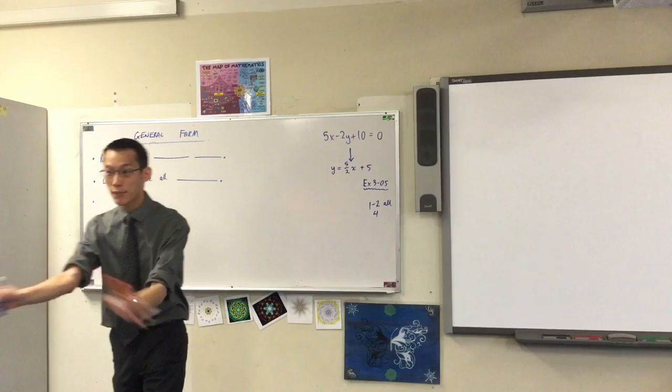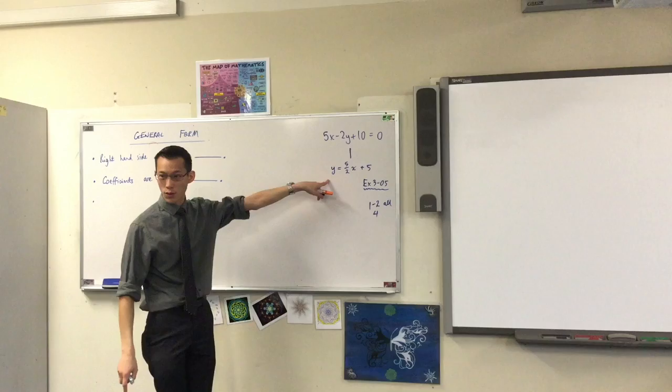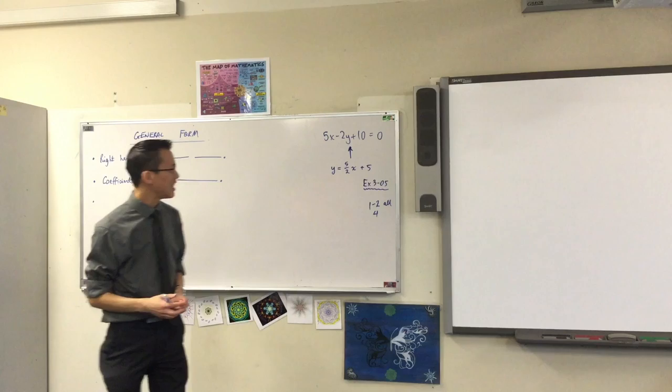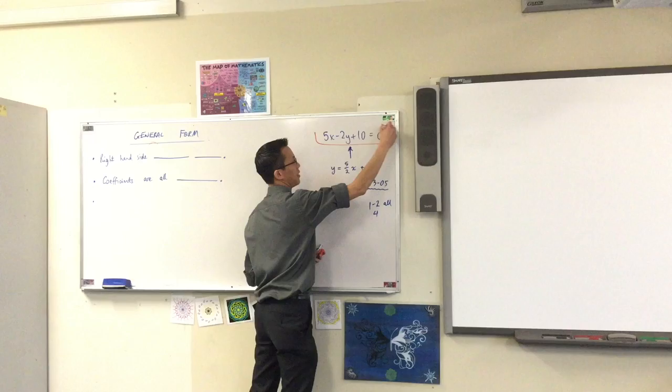However, on occasion, you will be given a line in this form and actually you've got to go in reverse. Now, here's what's weird. It's not immediately obvious why this form up the top is useful. You actually have to do a bit of work to get there. However, because eventually you will, they give this guy its own name. They call it general form.